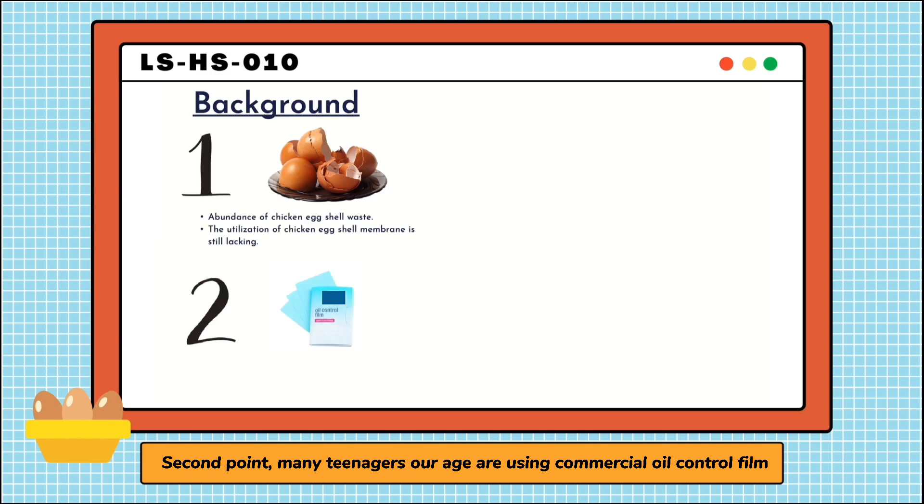Second point, many teenagers at our age are using commercial oil control film almost on a daily basis to help reduce shine and excessive facial oil in a practical way. These commercial oil control films are made from polypropylene, which is a type of thermoplastic polymer that can be found in woven bags, hygiene products, and tea bags. Unfortunately, polypropylene is extremely difficult to break down, taking about 20-30 years, plus they release toxins when they break down. These oil control films are part of the beauty industry waste, and it could be fatal if we let it build up over time.